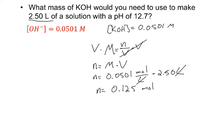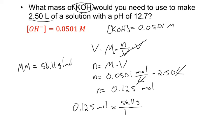So now I need to use the molar mass to get my moles into a mass. And I'm assuming you know how to do the molar mass calculation, so I'll just tell you. The molar mass of KOH comes out to be 56.11 grams per mole. So I'll take my 0.125 moles and end up with a value of 7.01 grams.